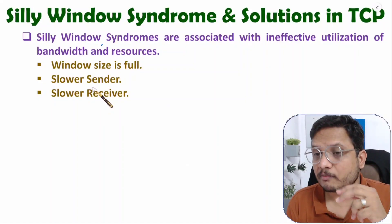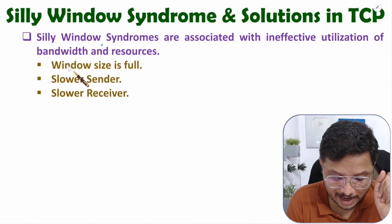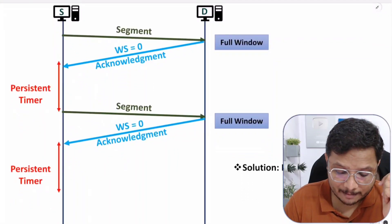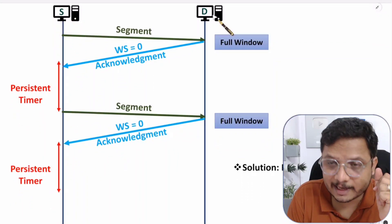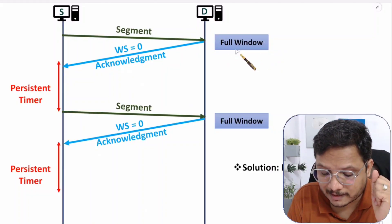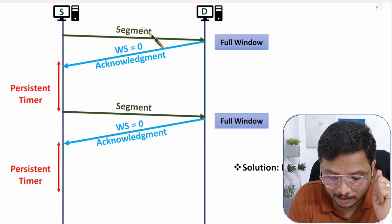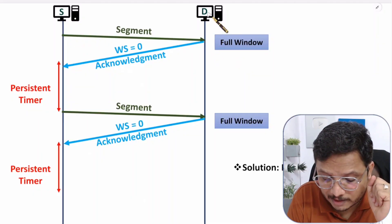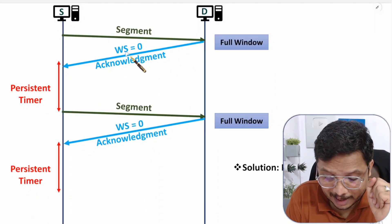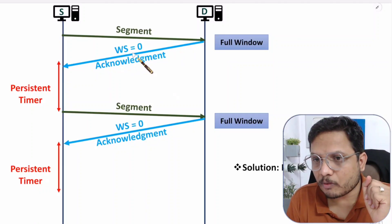I'll explain all three cases along with solutions with practical examples. Let us discuss the first scenario in which window size is full at the receiver side. Here, sender is sending data to receiver, and if you observe, window size is full at the receiver side. When a segment comes to the receiver, it will give an acknowledgement advertising window size equal to zero, meaning the window at receiver is full.